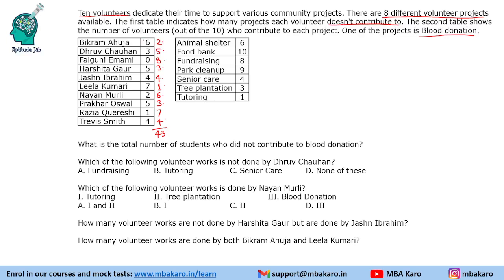This was volunteer-wise; now looking at it project-wise. One of the projects is blood donation. The total should come to 43. We have 16, 24, 33 plus 8 equals 41. So 2 people will contribute to blood donation as well.